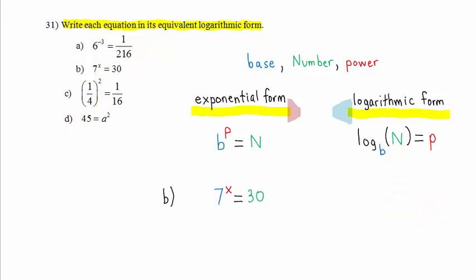We have the exponential equation 7 raised to the x power equals 30. In logarithmic form, we have log base 7 of N, which is 30, equals the power P, which is x. Here is the equivalent logarithmic form: log base 7 of 30 equals x.